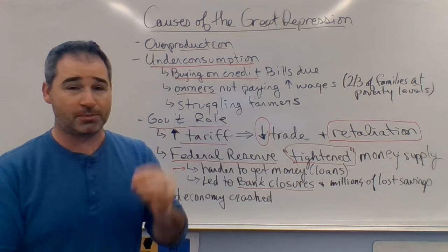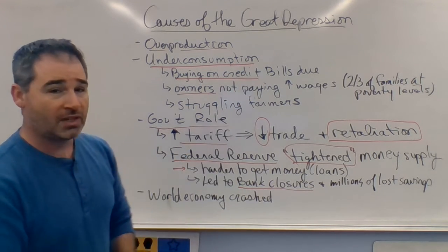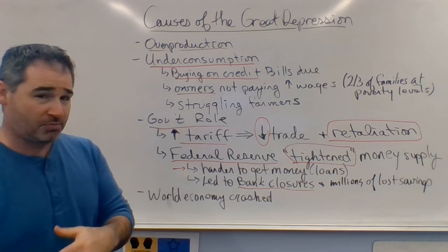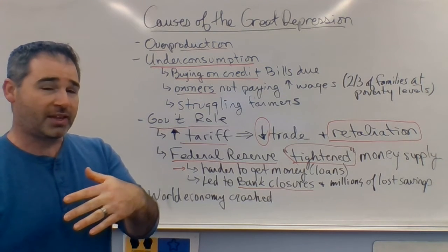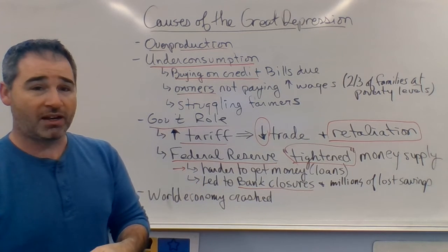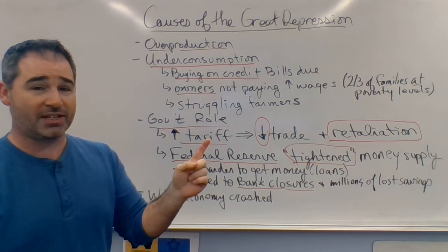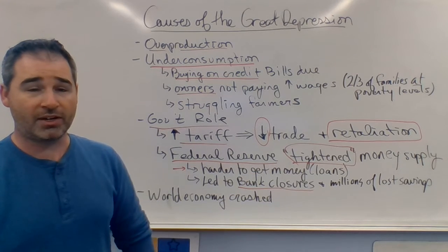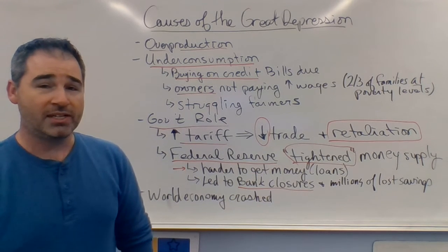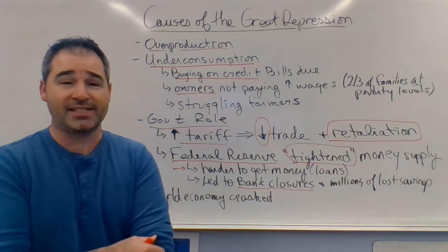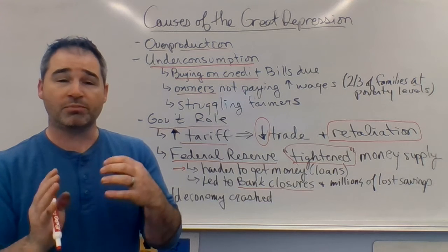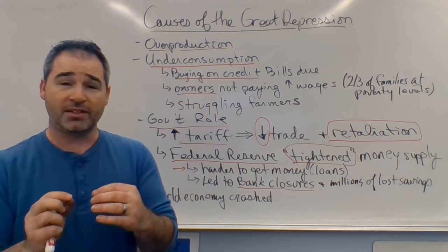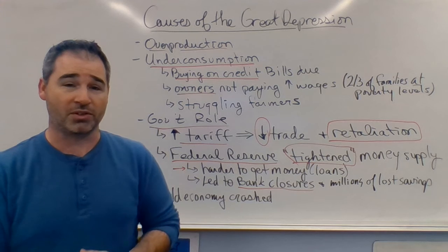In response, the world economy crashed. The Dawes Plan fell apart. Other economies, because they weren't trading and faced high tariffs, fell apart and went into shambles. The Great Depression became a worldwide problem, and the United States tried to solve it with internal policies that just made it worse.